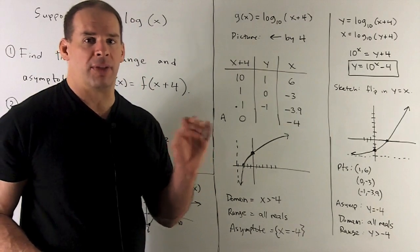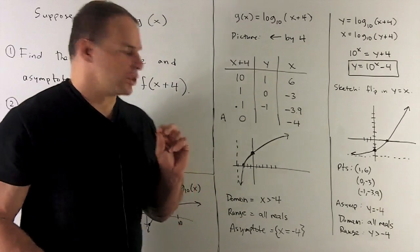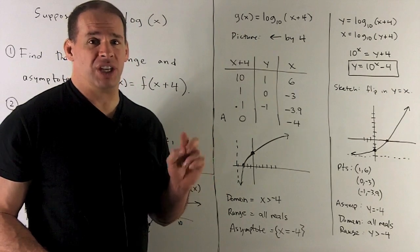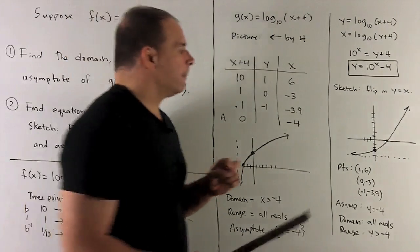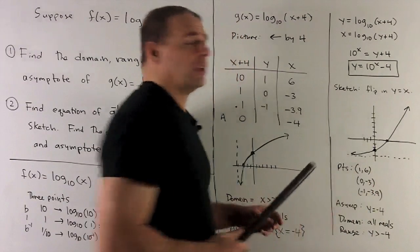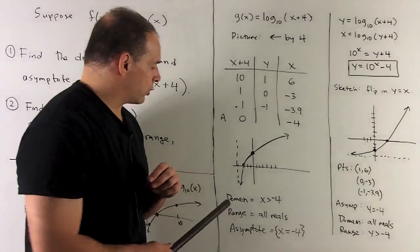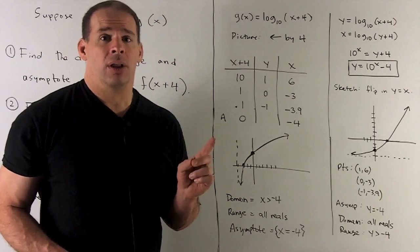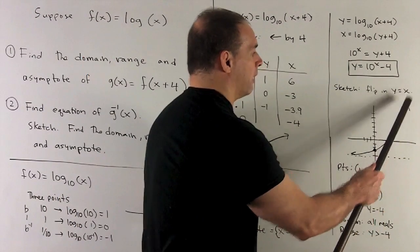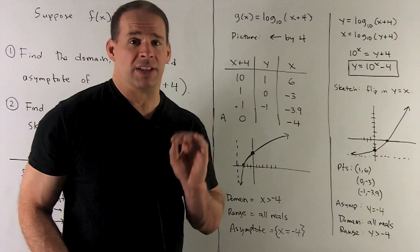Now we have the asymptote. How about domain and range? The relation between the domain and range for g and g inverse is you just flip them. The domain of g is x > −4, so the range of g inverse is y > −4 — and that's the asymptote line y = −4, with every y value above it hit. The domain of g inverse comes from the range of g, which is all reals. So the domain of g inverse is all reals.